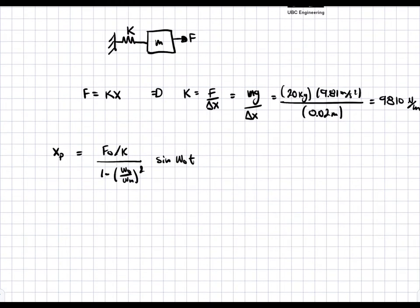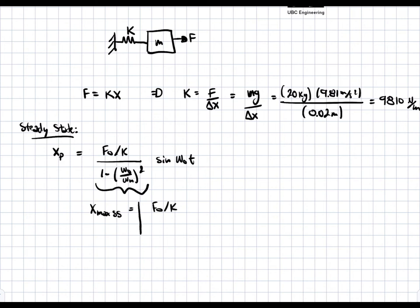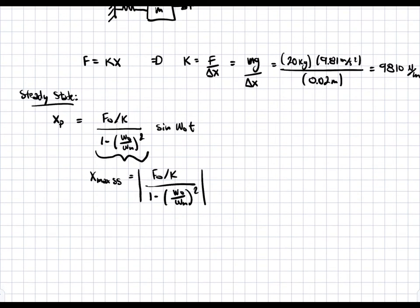Since we're only interested in the amplitude, we're just going to take this term. So x_max at steady state is equal to the absolute value of F0 over k divided by 1 minus (ω0 over ωn) squared. We don't care about the sine term because we're assuming that equals 1, and we take the absolute value in case it's a negative number. We have k, but we don't have F0 and we don't have the natural frequency.